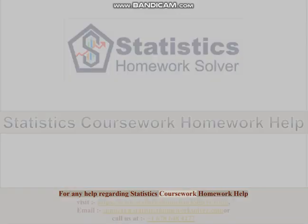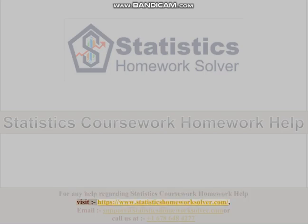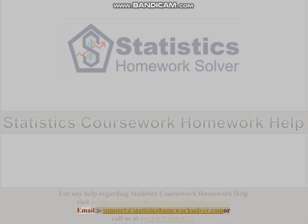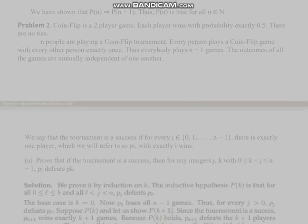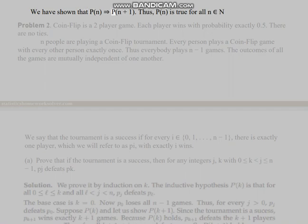For any help regarding Statistics Coursework Homework Help visit statistichomeworksolver.com. Problem 1: Prove that for all N in the natural numbers, the following identity holds. Solution: By induction on N greater than or equal to 1, with induction hypothesis for all N. Base case N equals 1. Inductive step: assume P(N), we need to show that P(N+1) holds. As required. We have shown that P(N) implies P(N+1). Thus P(N) is true for all N.